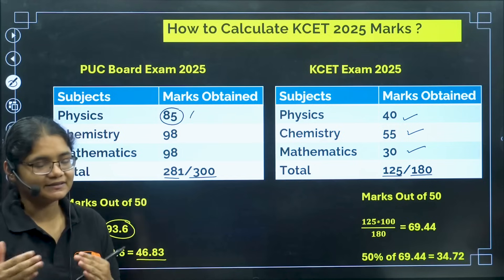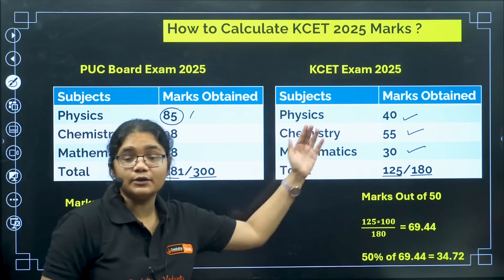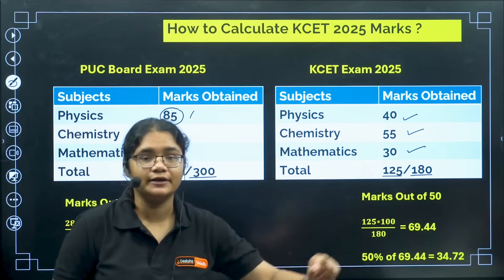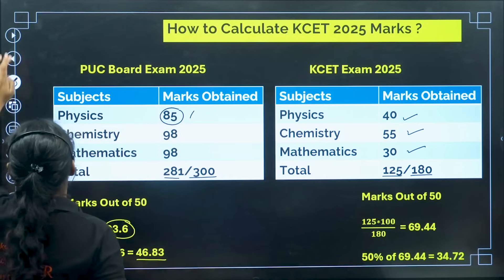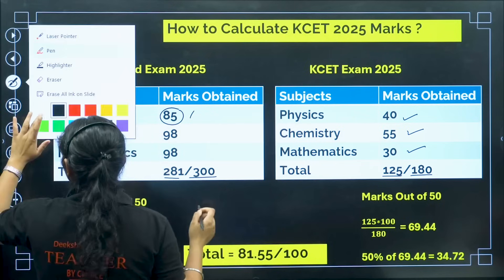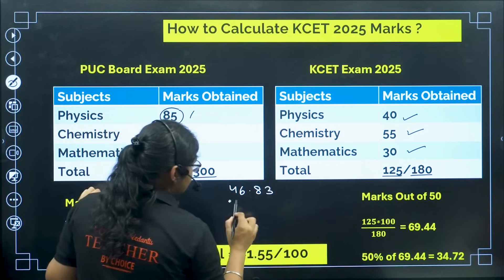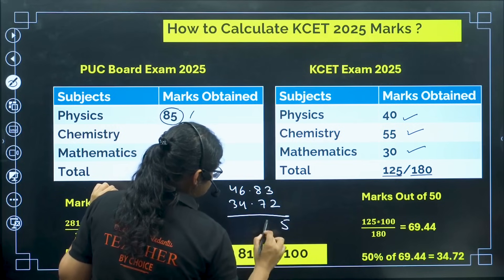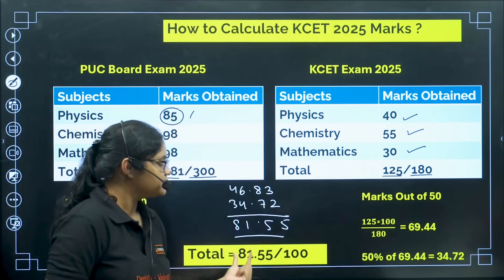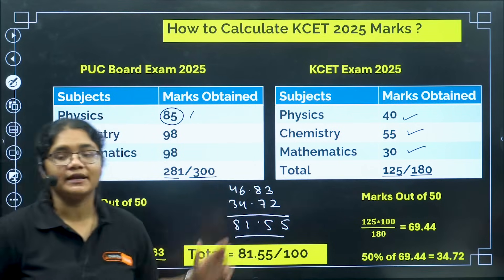From your PU 2025 examination, 50 percent comes out to 46.83, and from your KSA 2025 examination, 50 percent comes out to 34.72 percent. If I add both of them — 46.83 plus 34.72 — that comes out to 81.55 percentage. This is your total percentage after taking 50 percent weightage from your PU board and 50 percent weightage from your KSET examination.